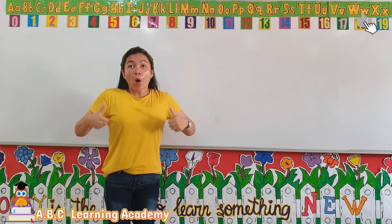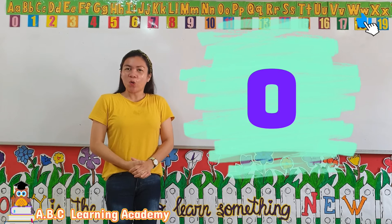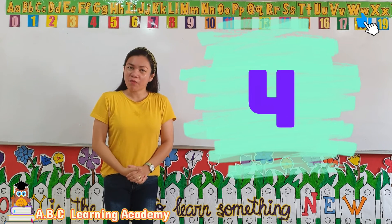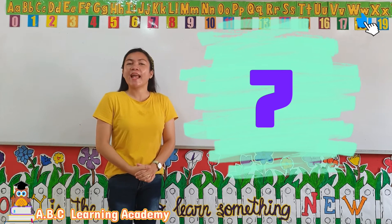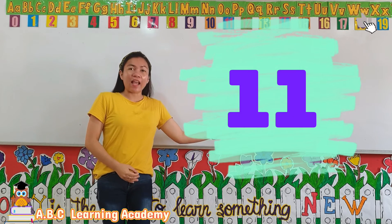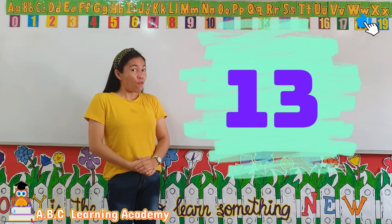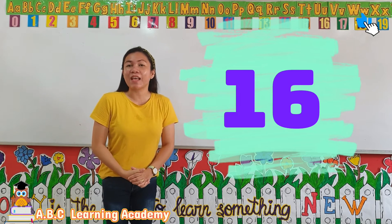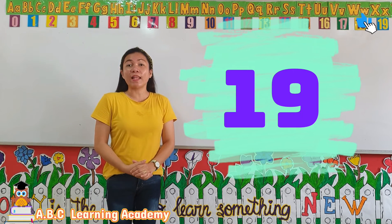OK. 0, 1, 2, 3, 4, 5, 6, 7, 8, 9, 10, 11, 12, 13, 14, 15, 16, 17, 18, 19, 20.